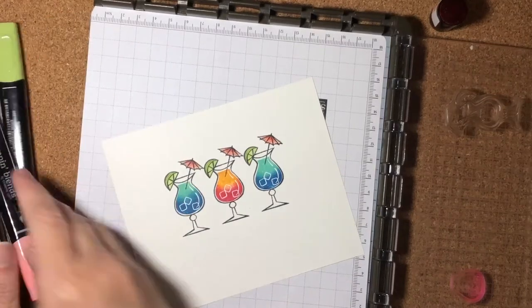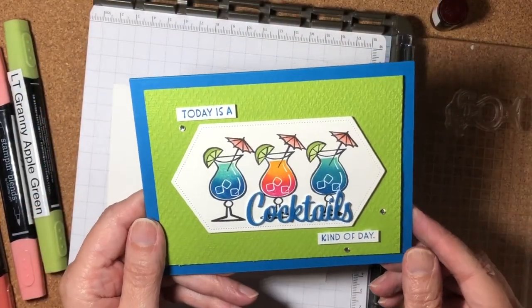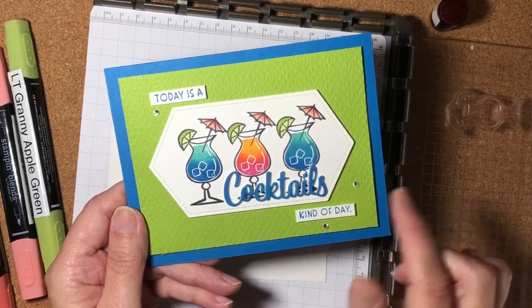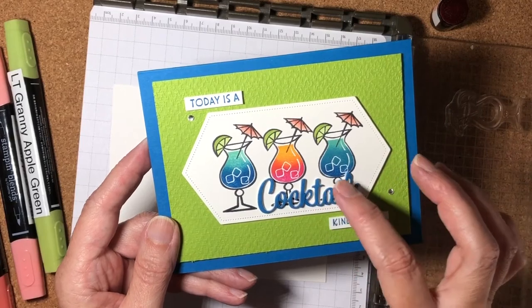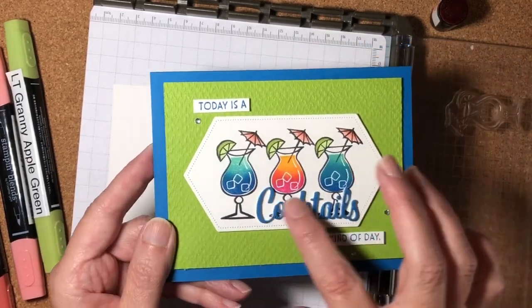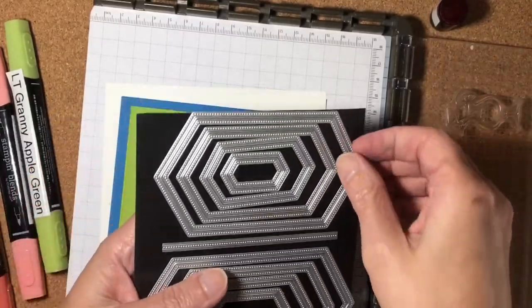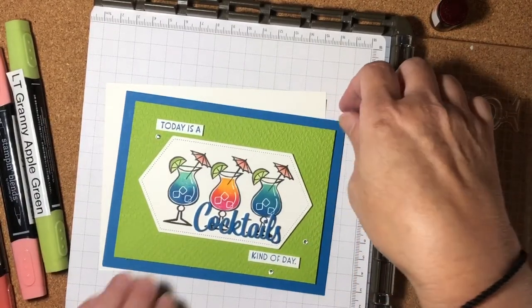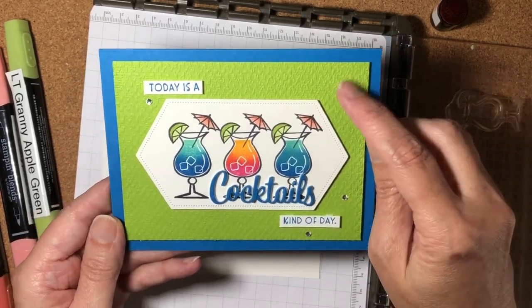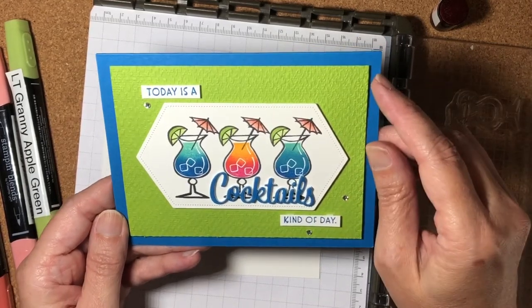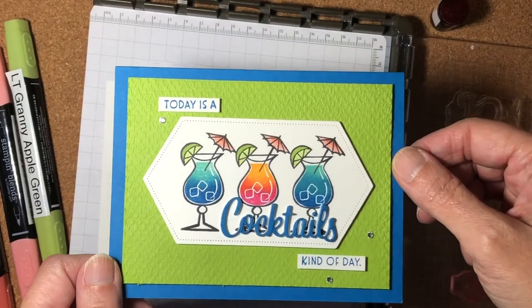Let me show you the card that I made with these. I used some of the sentiments from the stamp set. Today is a cocktails kind of day. The cocktails is from the die set, and you'll notice it's on dimension. We also now have dimensional foam, so you can add dimension to the entire sentiment. And I cut it out using the Stitched Nested Labels dies. I used this one right here, so it gave some nice little stitching detail around there. And then I used the Tasteful Textures 3D embossing folder. That's probably my most used embossing folders these days. And then I just added a couple of little rhinestones to add a little bling. So I hope that you can see that really well. Isn't that a fun card?